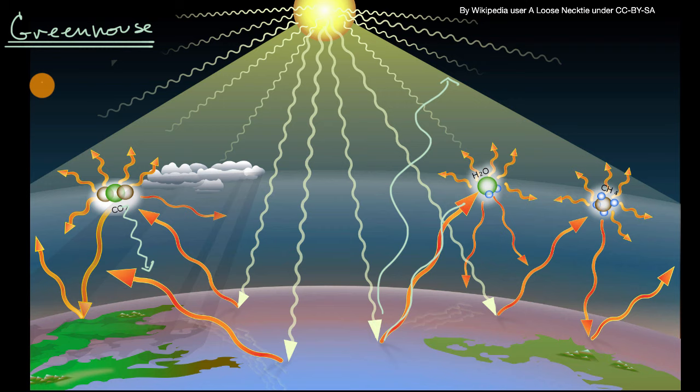Without greenhouse gases, earth's surface would be about negative 18 degrees Celsius, which is the same as zero degrees Fahrenheit, which I think most of y'all would recognize is very cold, relative to what the actual averages are, which are 15 degrees Celsius or 59 degrees Fahrenheit.